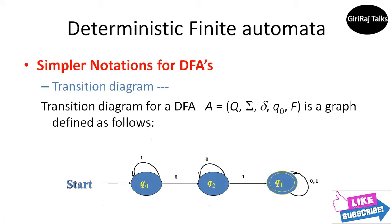Let us discuss simpler notations for deterministic finite automata. Specifying a DFA as a five-tuple with a detailed description of the delta transition function is both tedious and hard to read. There are two preferred notations for describing automata: the first is a transition diagram and the second is a transition table.